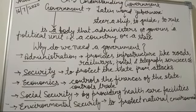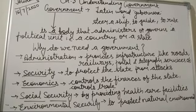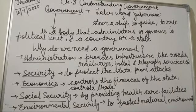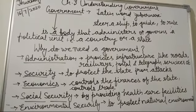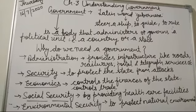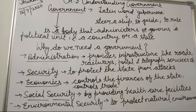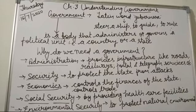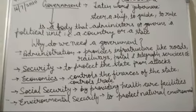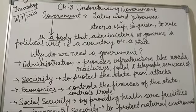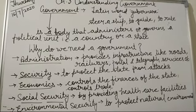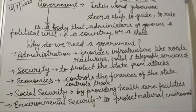The next function a government performs is economics — to ensure the economic security of the country, it controls the finances of the state, issues currencies, controls trade, and decides economic policies. It also provides social security by offering healthcare facilities and old age pensions, preventing discrimination of disadvantaged groups, and ensuring equal opportunities for all. During natural disasters, the government rescues and cares for the affected. The government also protects the natural environment by controlling pollution and over-exploitation of resources.